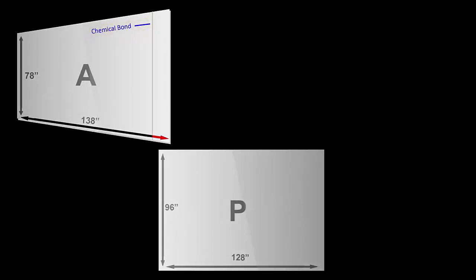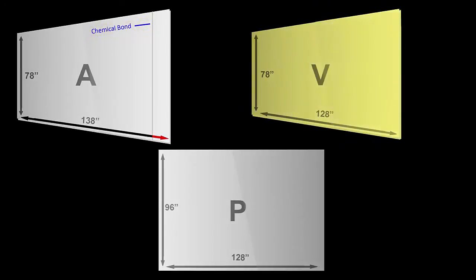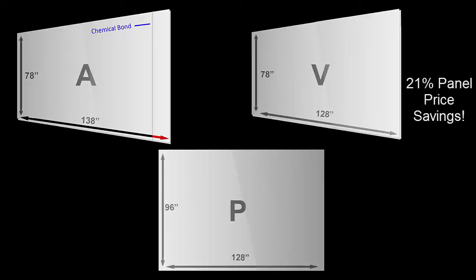The value engineered panel, panel V, was simply kept at 128 inches in length to match the standard P panel. This resulted in a savings of 21% on panel price as compared to the custom panel, while reducing size by only 7%.